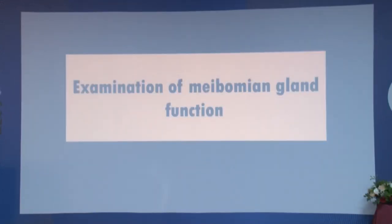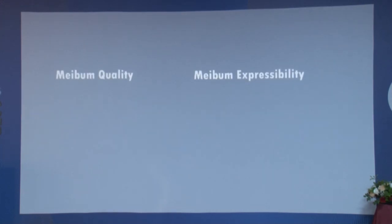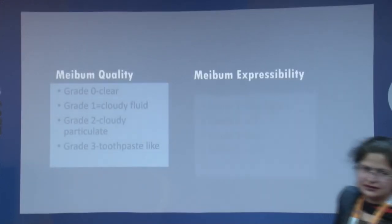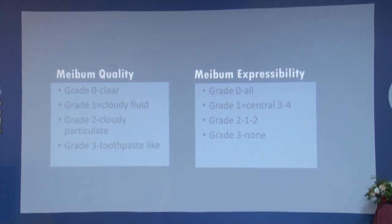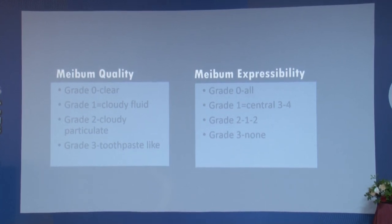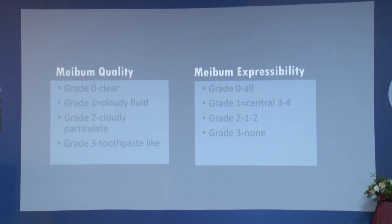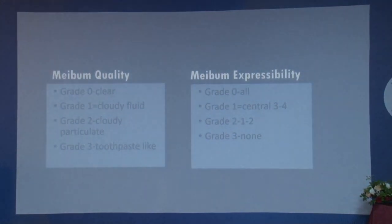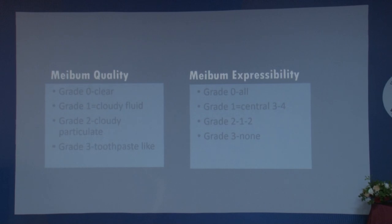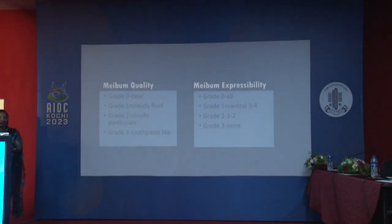Starting with the lipid layer — examination of meibomian gland function. We can now quantify and qualify the meibum secreted from the meibomian glands. Grade zero is clear meibum coming out; grade one is cloudy fluid; grade two is cloudy but particulate; and grade three is toothpaste-like secretions, which is very commonly seen nowadays in our clinics.